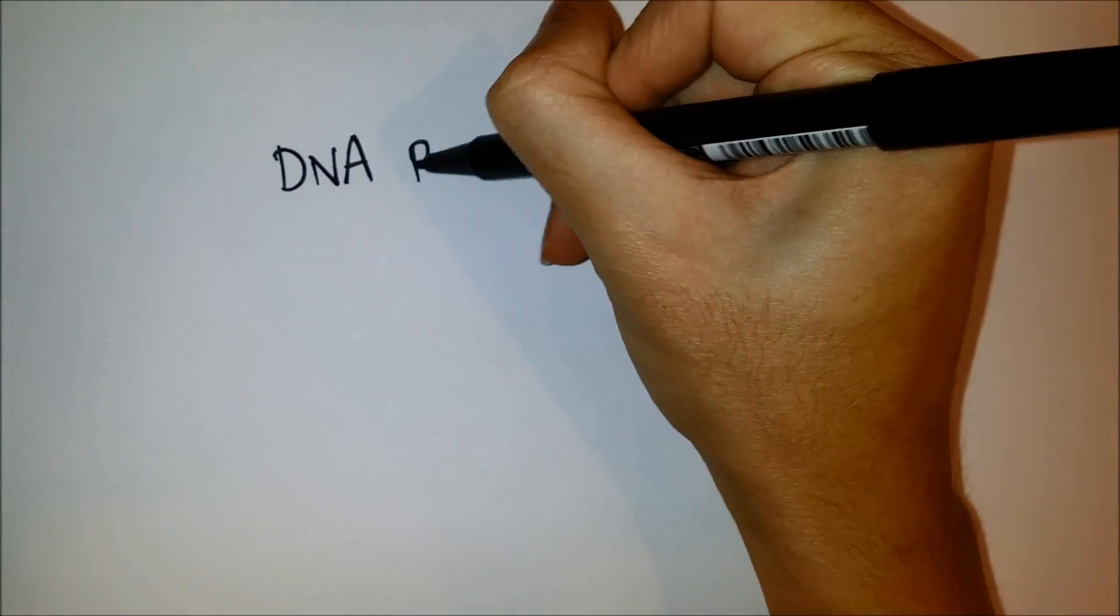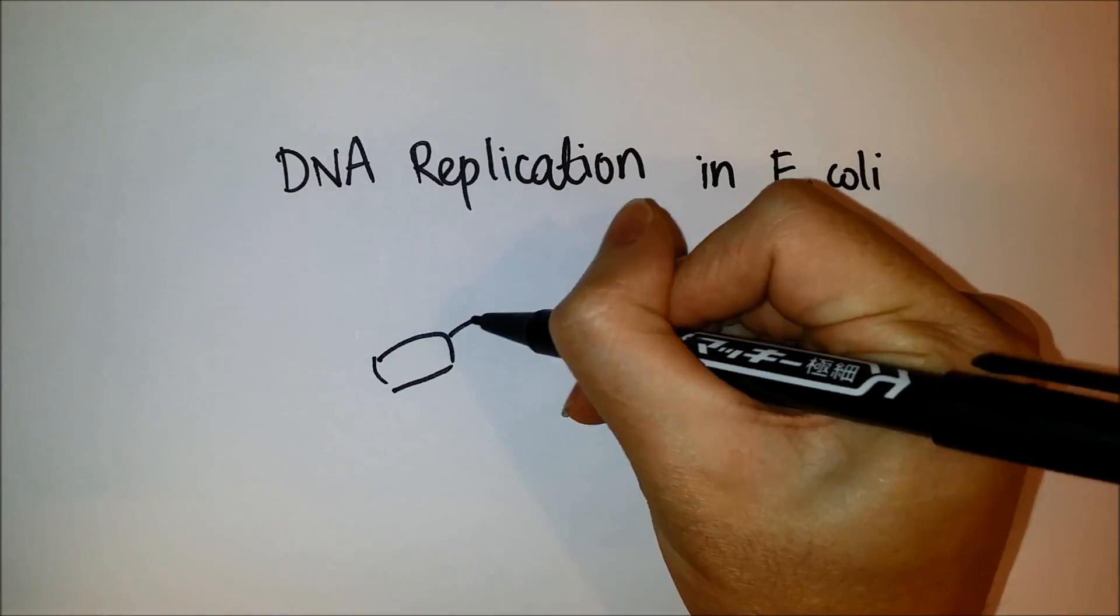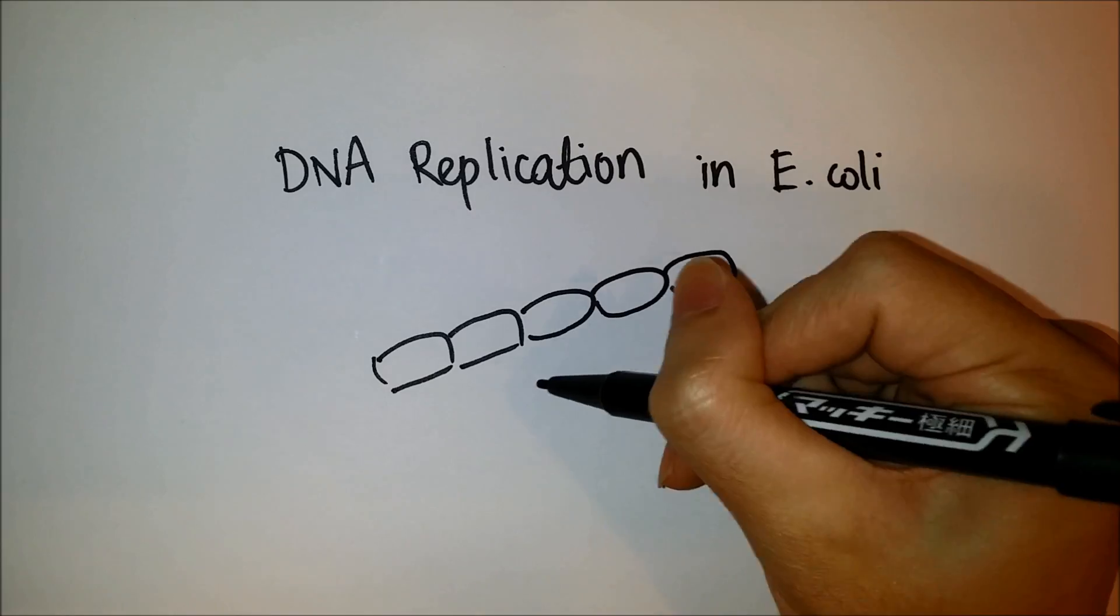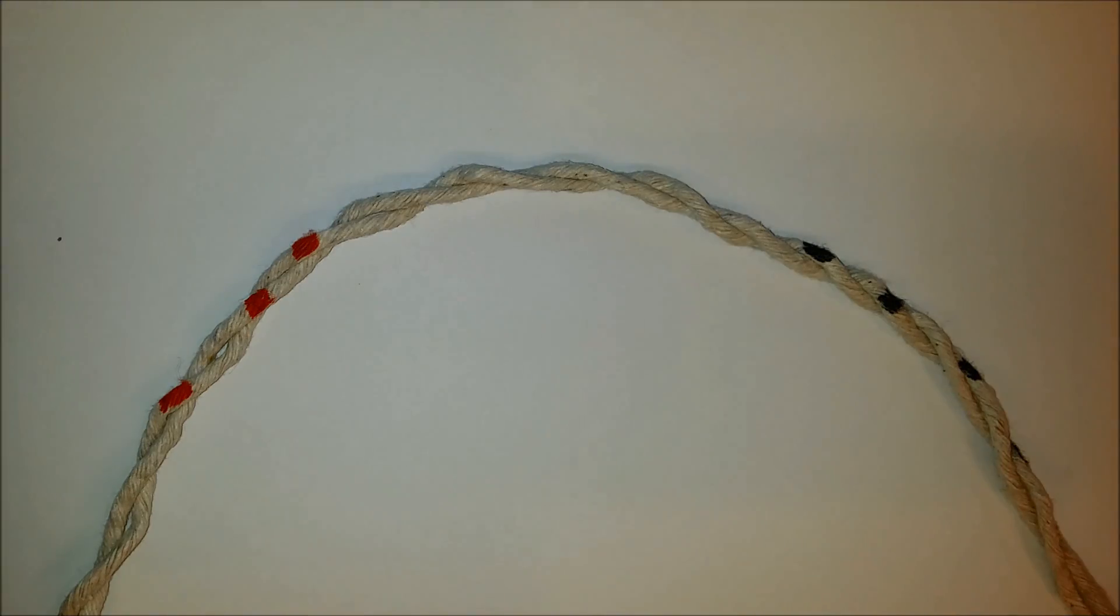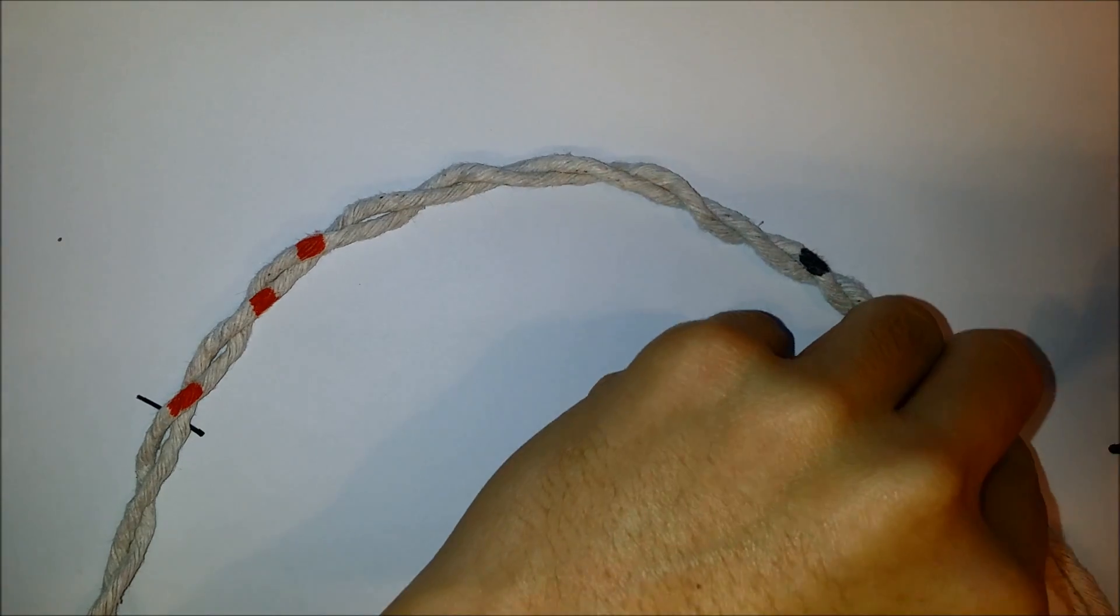In this video, we will be explaining the events in DNA replication, specifically in E. coli. The cord string is used to visualize the double helix DNA of an E. coli plasmid.